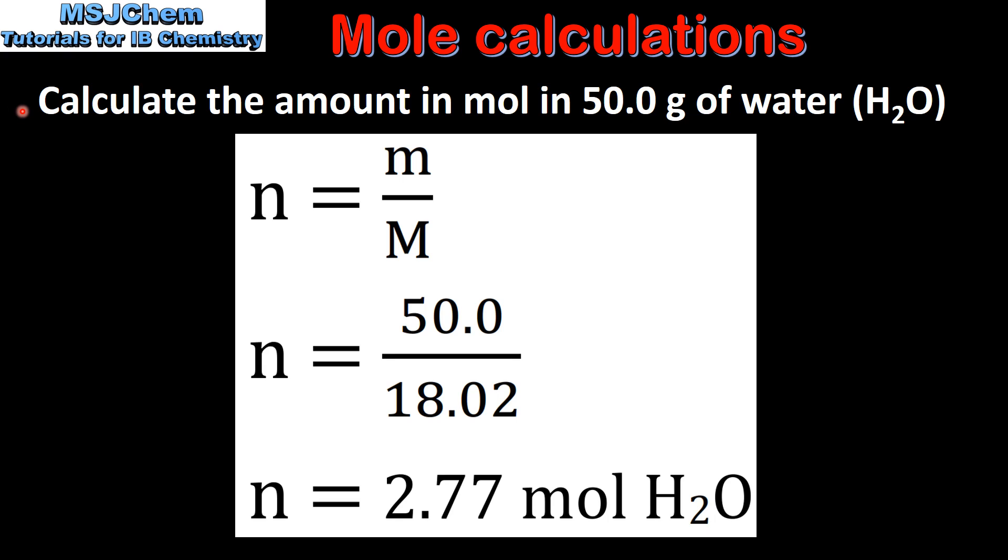Calculate the amount in moles in 50 grams of water. To solve this we'll use the equation amount in moles equals mass divided by molar mass. The mass is 50 grams and the molar mass of water is 18.02 grams per mole, and this gives us 2.77 moles of H2O.